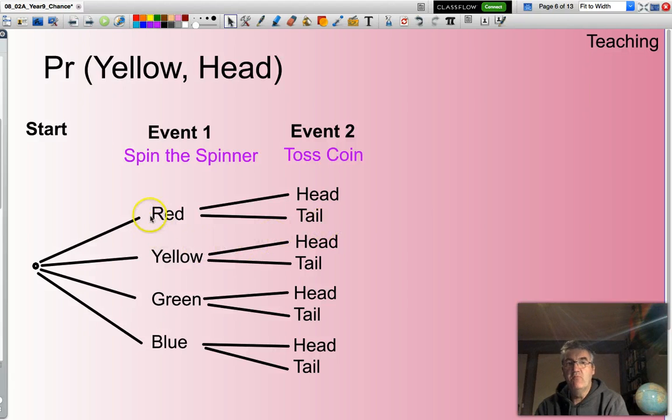So for instance, I might spin the spinner and land on a red and toss a coin and land on a head.